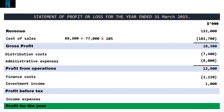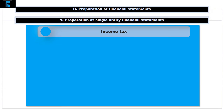This generates a profit before tax of $11,680. Finally, we arrive at the figure for income tax, which is in fact the sum of the numbers pertaining to current and deferred tax. Let's start with the current tax expense.